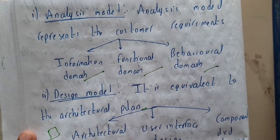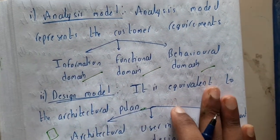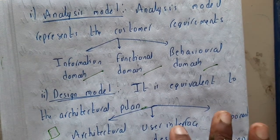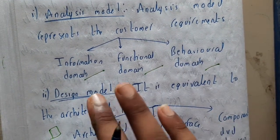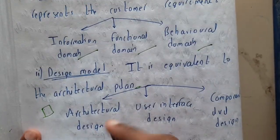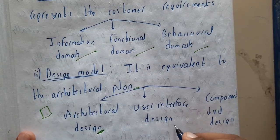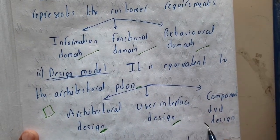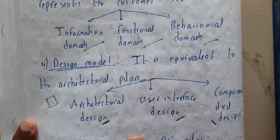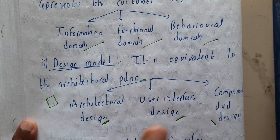The design model is equivalent to an architecture plan. Basically, when a civil engineer is constructing a building, he will be building a plan in CAD software — that comes under the design model. So we will be doing architectural design, user interface design, and component level design. These three we'll also be discussing in a future chapter.